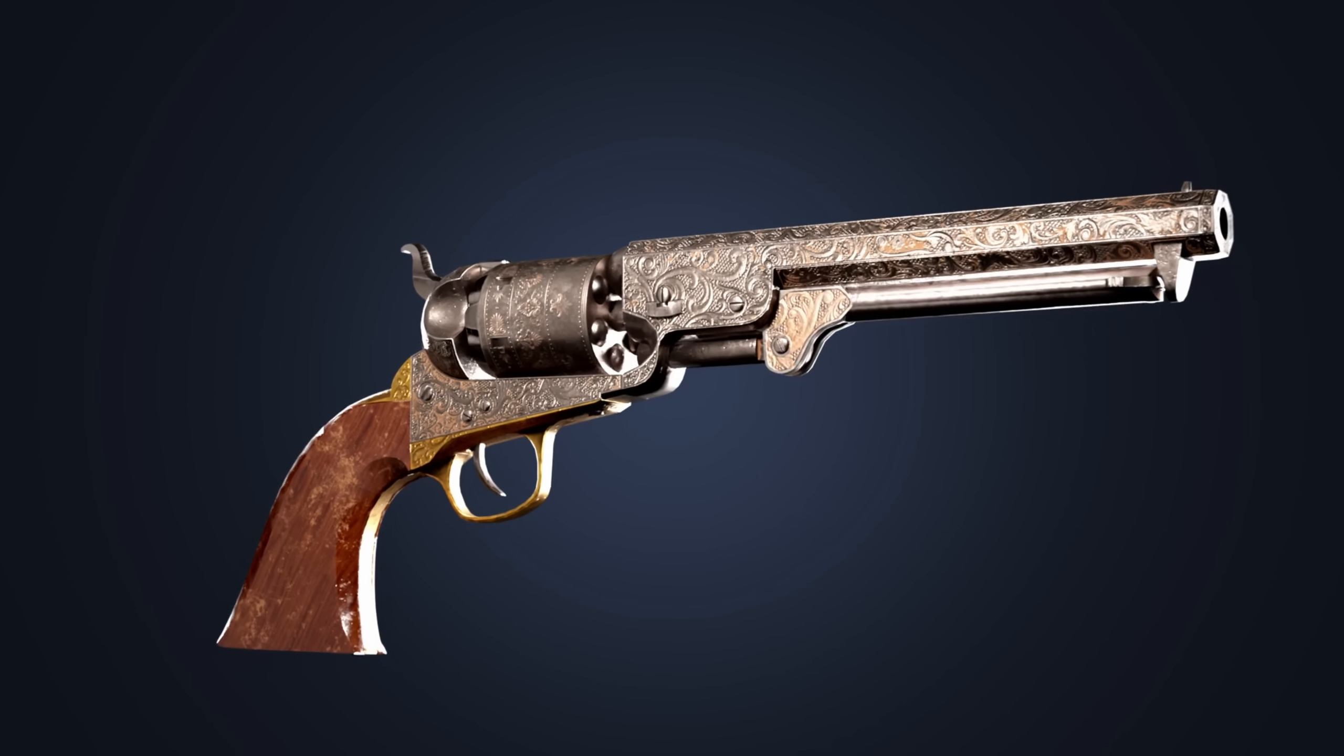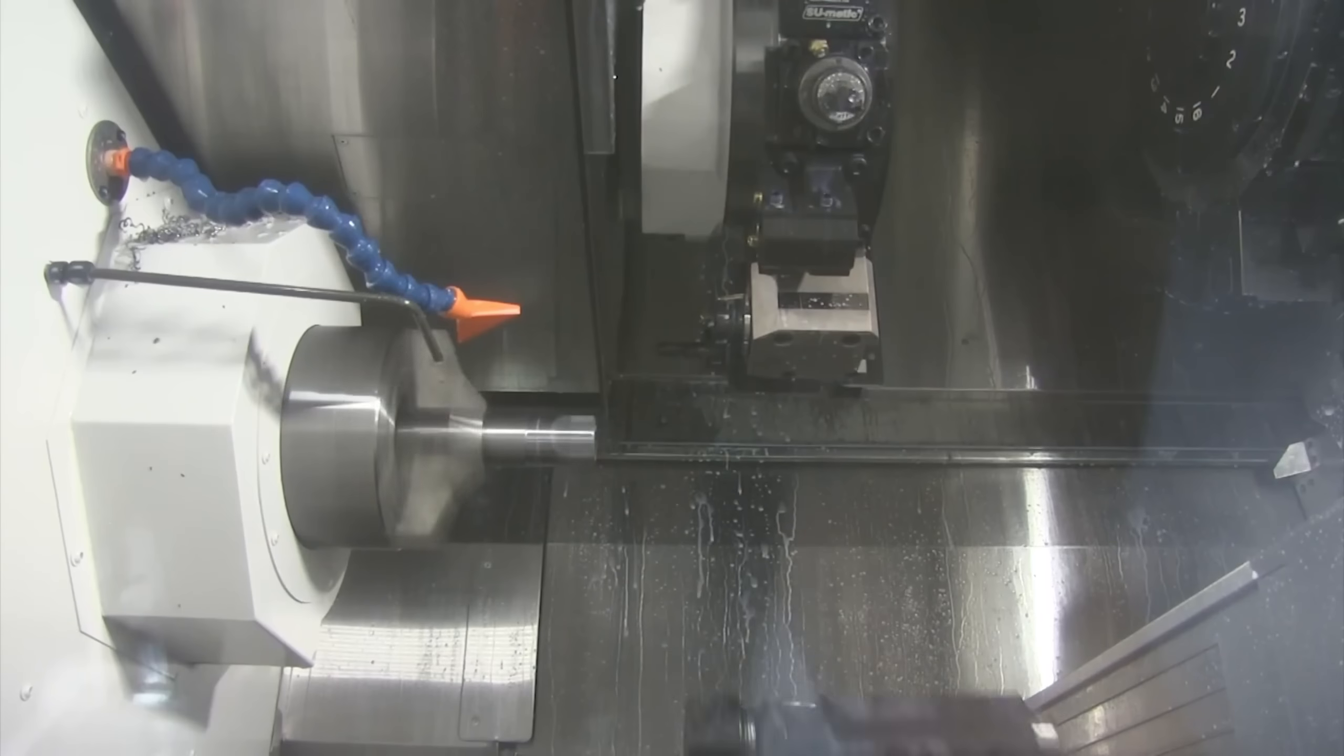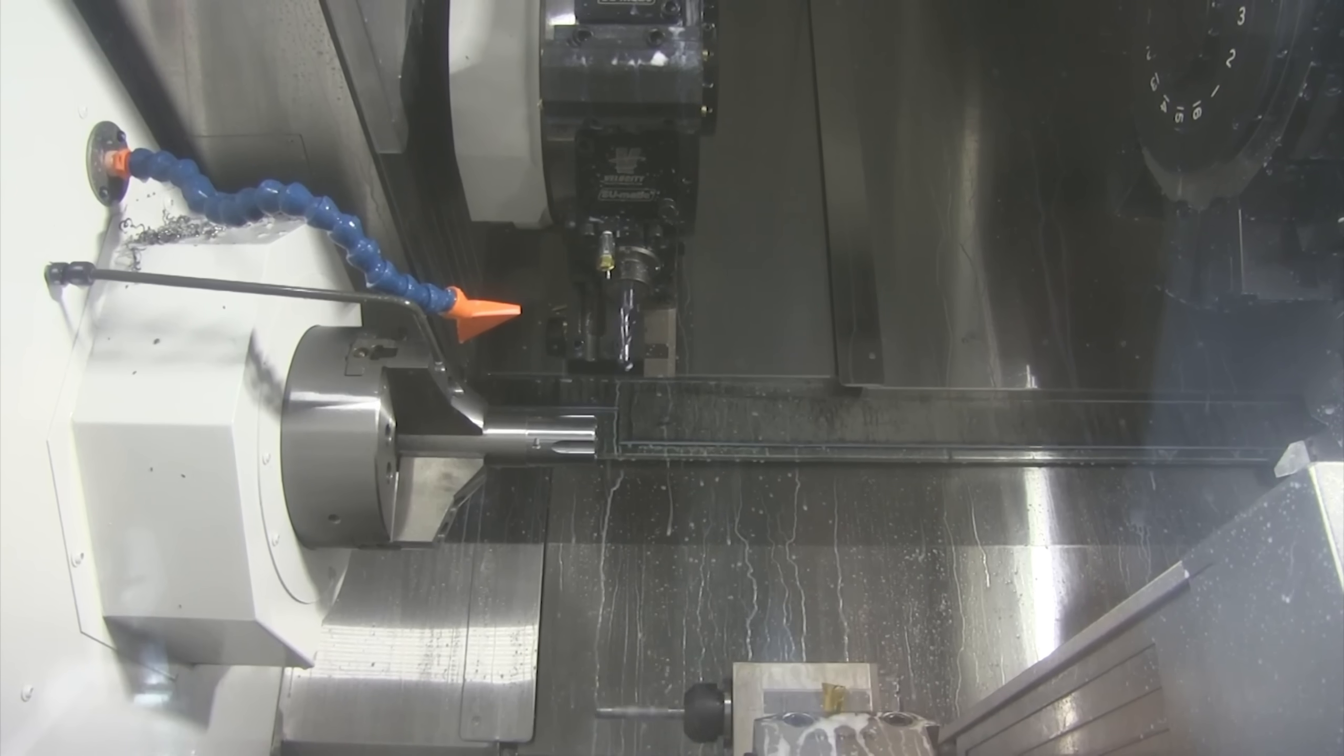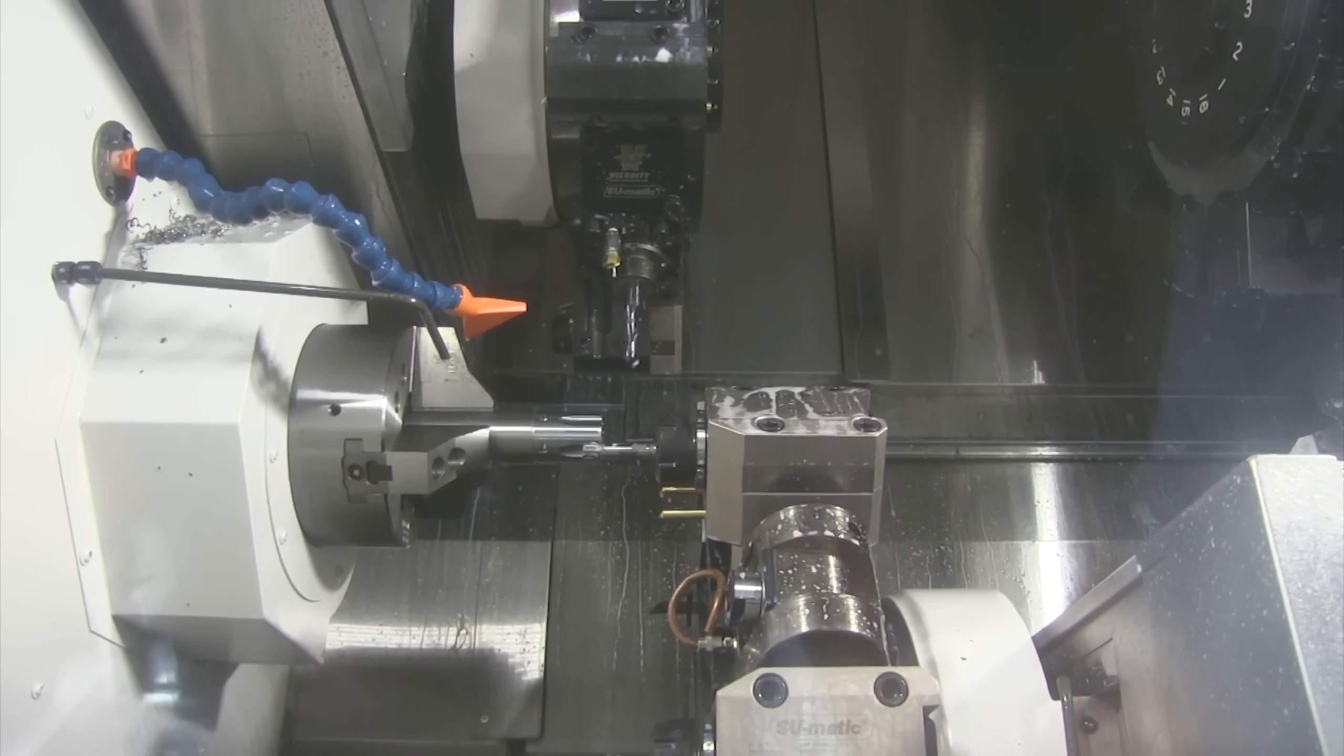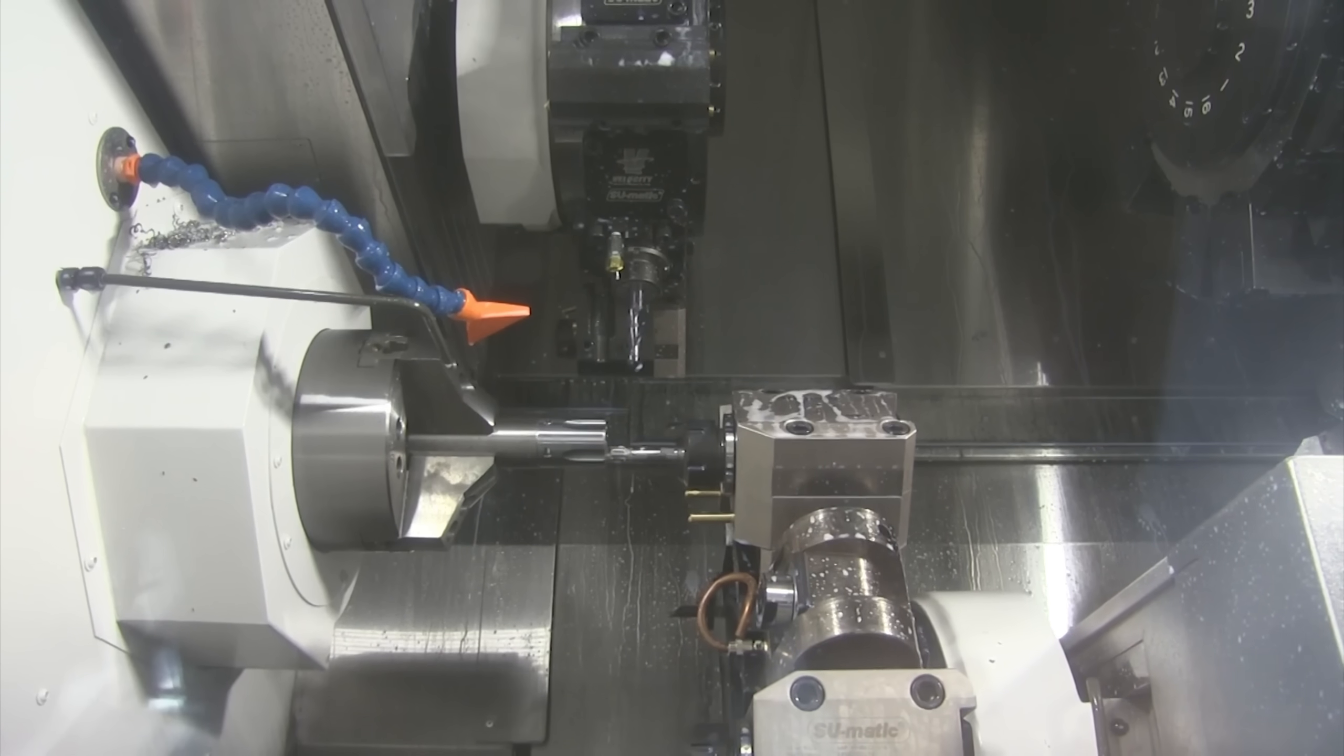After inspection, any sharp edges or burrs left from machining are removed. The cylinder then goes through a finishing process. High-speed buffers polish the exterior and chambers, reducing friction and helping to prevent corrosion. This finish is important for both the function and durability of the revolver, ensuring that the cylinder rotates smoothly and stands up to years of use.